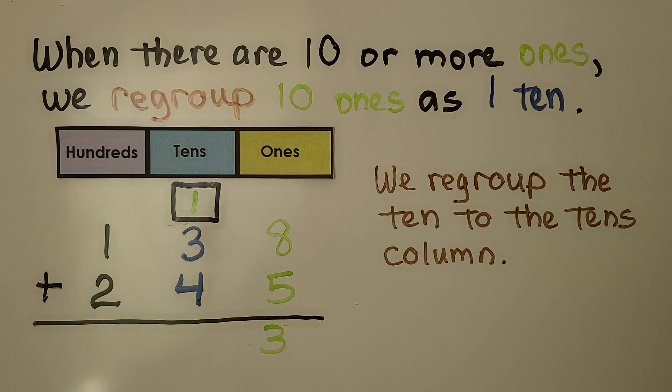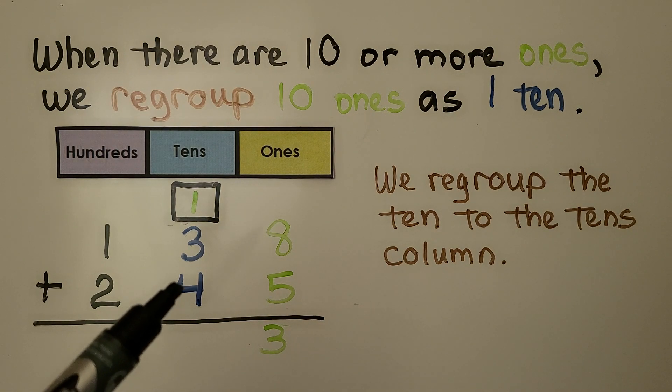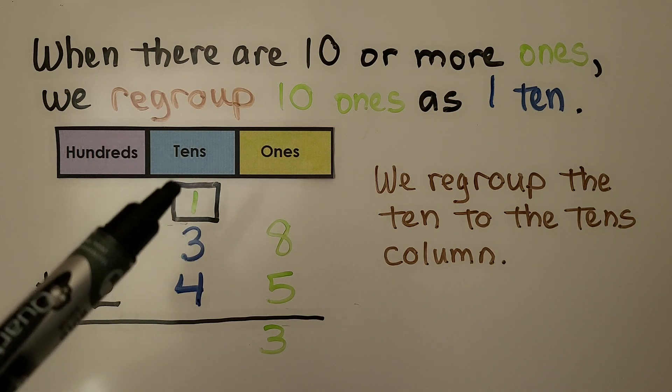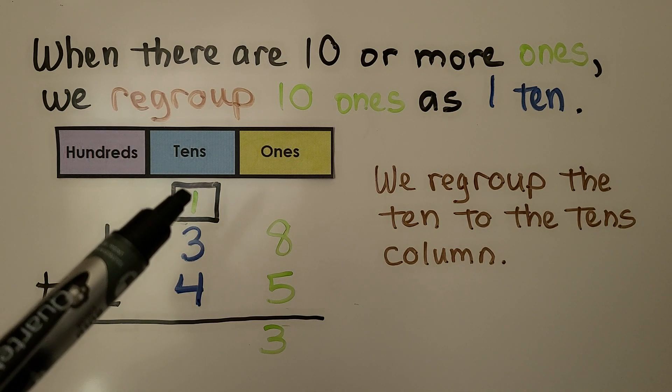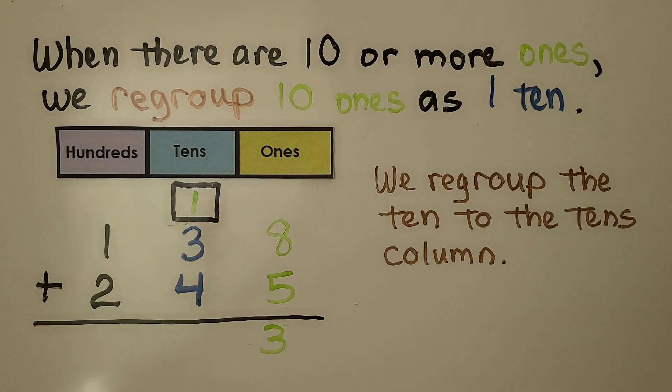Then we add the tens. We have four plus three. That's seven tens. And we remember to add that regrouped ten. That's eight tens.